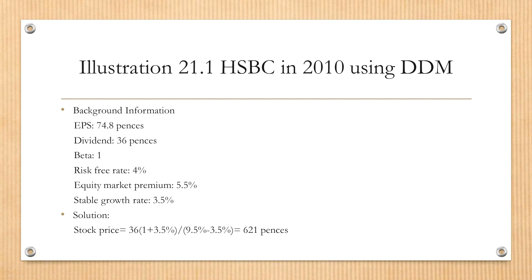Here's one example: HSBC back in year 2000, using the DDM model. HSBC is a British global bank with significant U.S. business and is one of the largest banks globally.